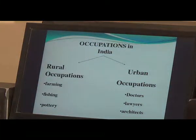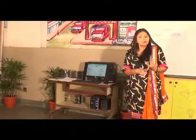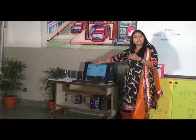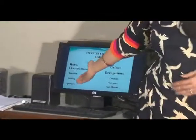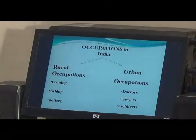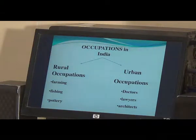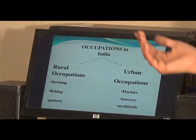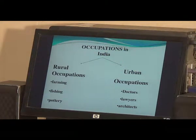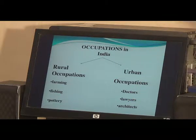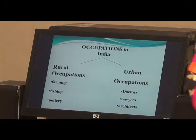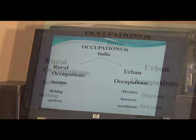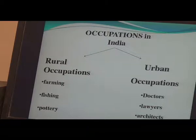Different types of occupations — how do they work and where do these people work? India is our country, and in India our occupations are divided into two parts. We have rural occupation and urban occupation. By rural I mean the areas that are not developed or that do not have enough facilities. Farmers, fishermen, people in villages choose occupations like farming, fishing, and so on — these are termed as rural occupations. And we see lawyers, doctors, architects in urban areas, so these come under urban occupation. Are we clear with the difference between rural and urban occupation?